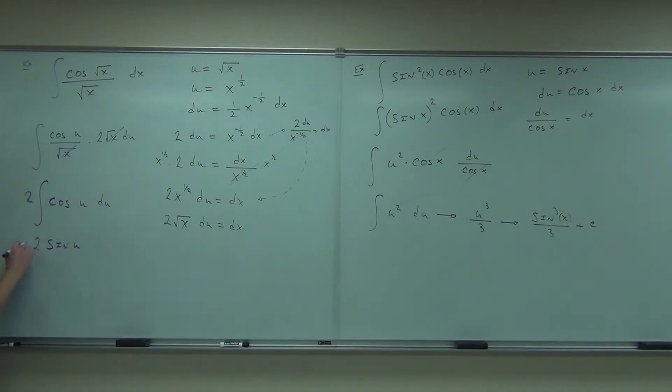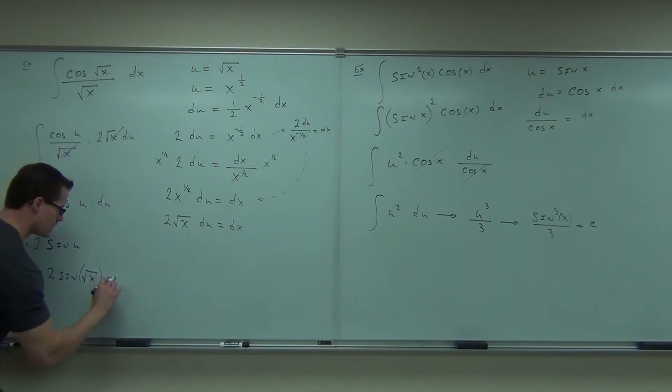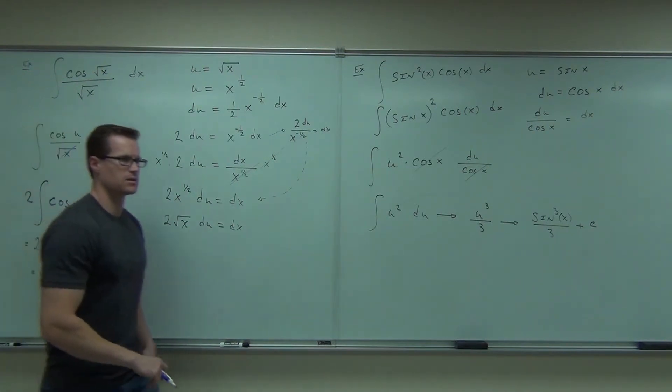So sine u, this equals 2 sine u. That is 2 sine... Let's go ahead and substitute back in for what u is. Put the square root of x. Put a plus c behind it, and you are done.